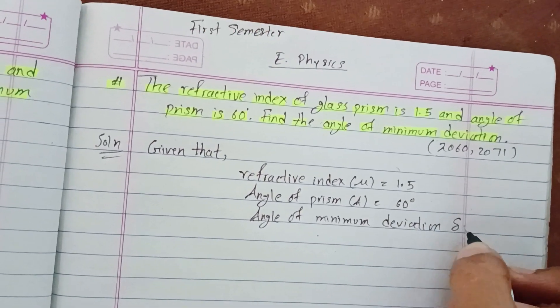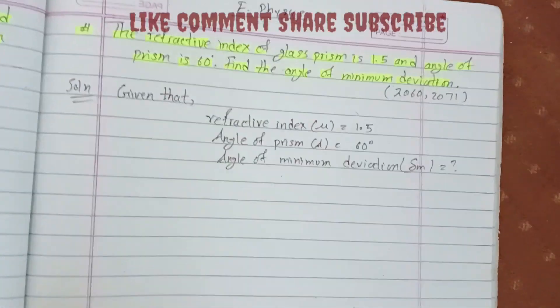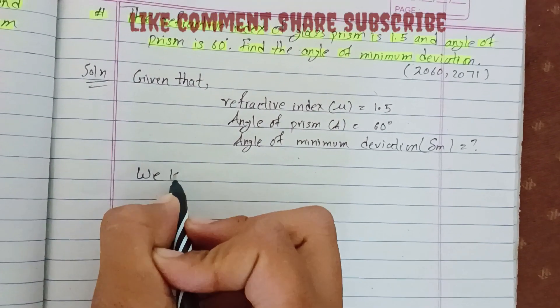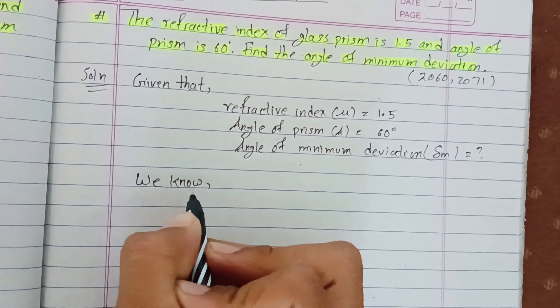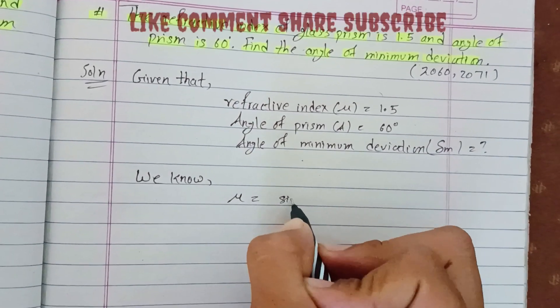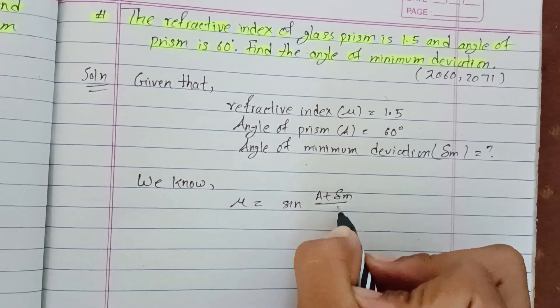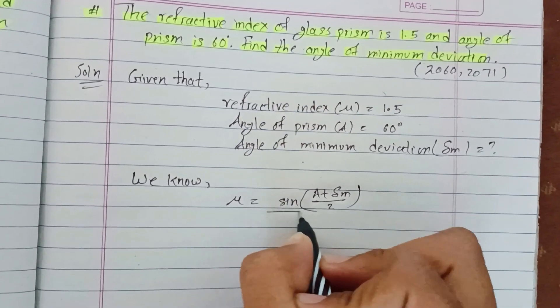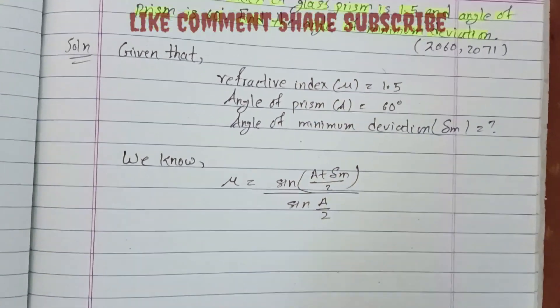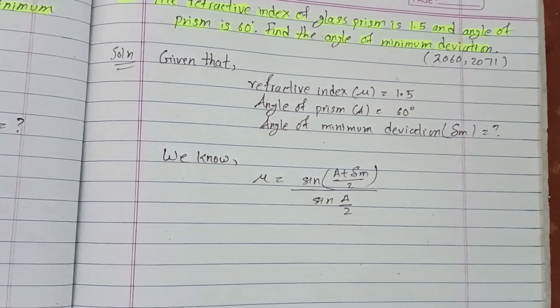We know that refractive index μ equals sin((A + δm)/2) divided by sin(A/2). This is the formula.